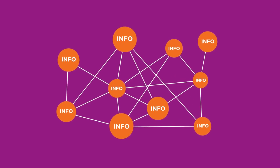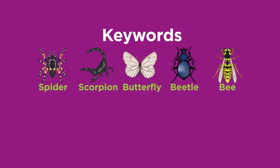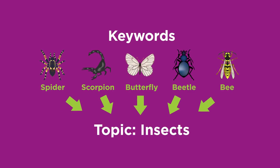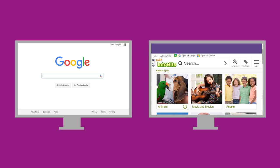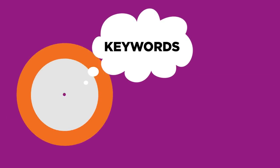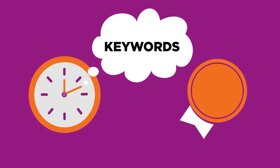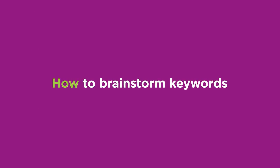There's a lot of information out there. The trick is finding the good stuff. Keywords are important words related to your topic that help you find good information. Whether you're searching the internet or a library database, thinking about keywords before you search can save time and help you get better results. This video will show you how to brainstorm keywords for your searches.